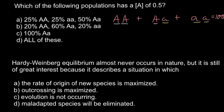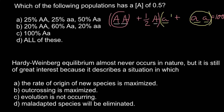To find the frequency of the dominant allele, we add the frequency of the homozygous dominant genotype plus one half of the frequency of the heterozygous genotype. To find the frequency of the recessive allele, we add that frequency plus one half of the heterozygous genotype. Let's apply this to answer A.